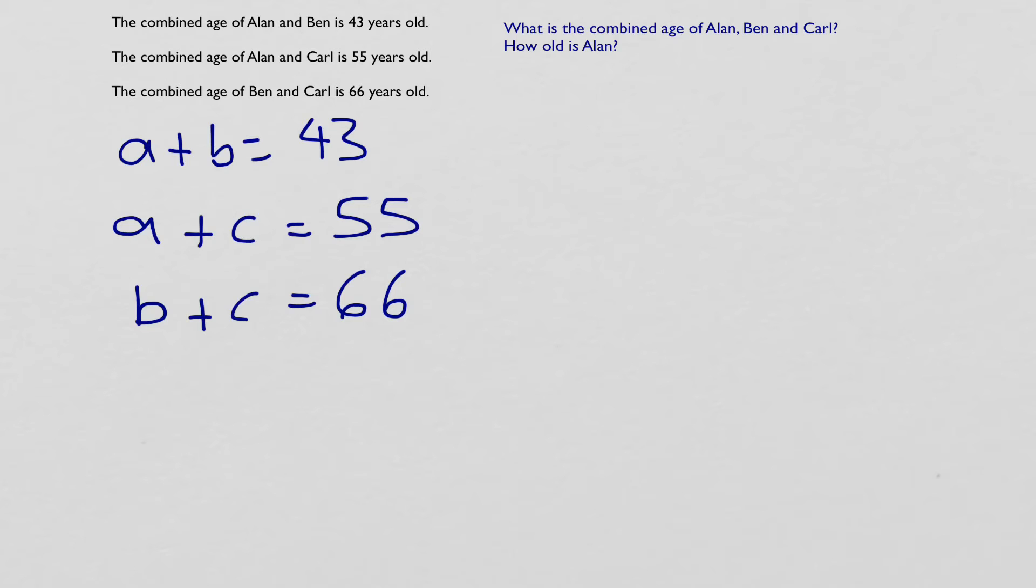Okay, this is where it gets tricky. We can't solve, looking at this as it is, what any of the letters are. So we have to do something very clever indeed. And that is this. We're going to add together two of the equations that have the same letter in it. And I'm going to add, because this one and this one both have c in it, I'm going to add the equations together.